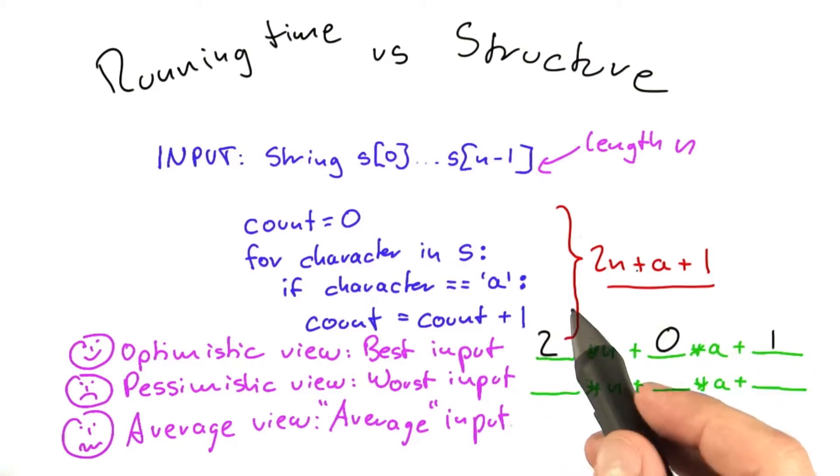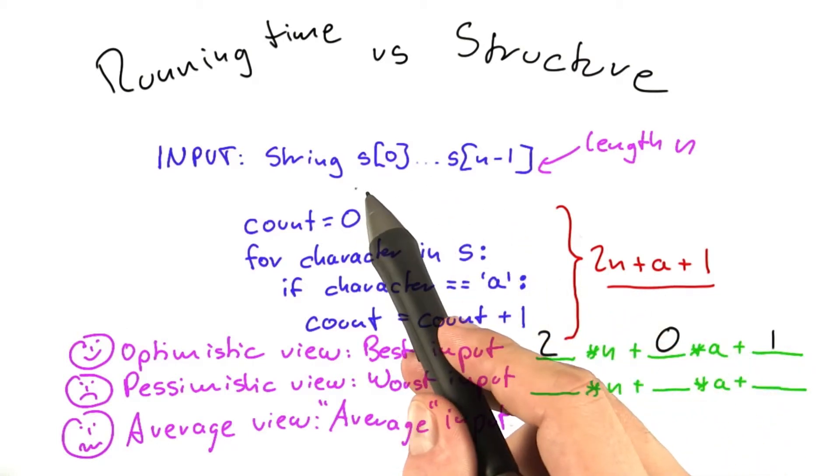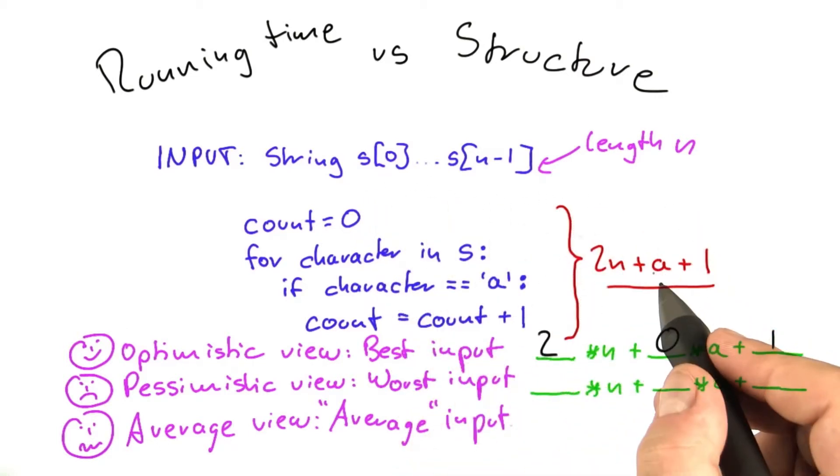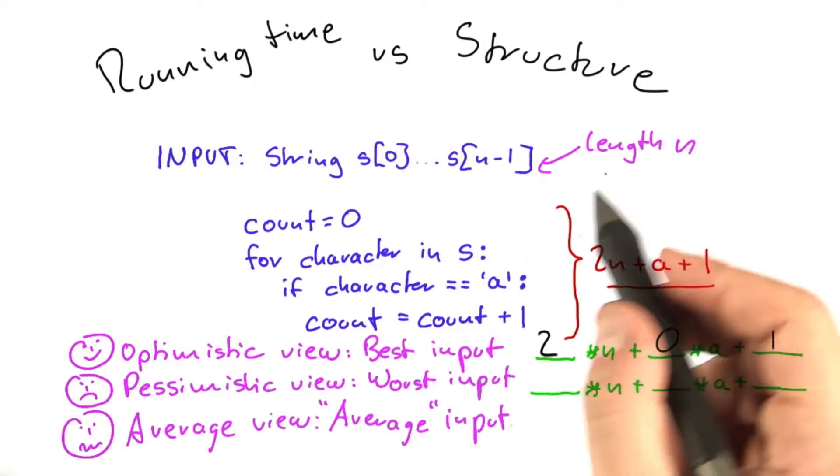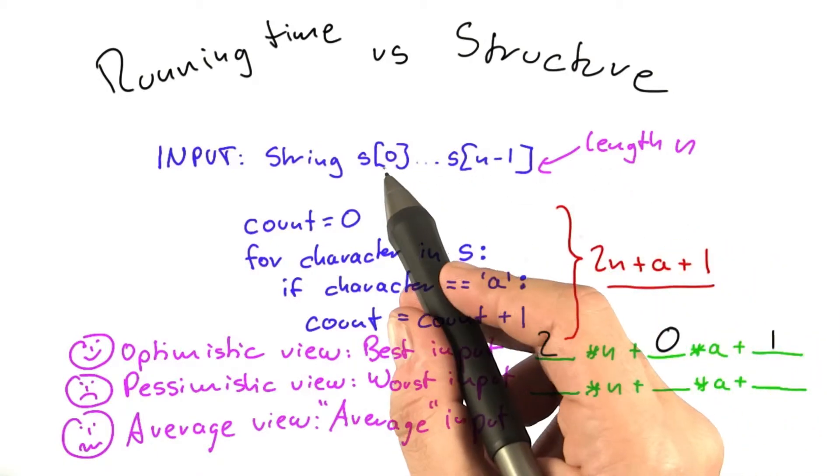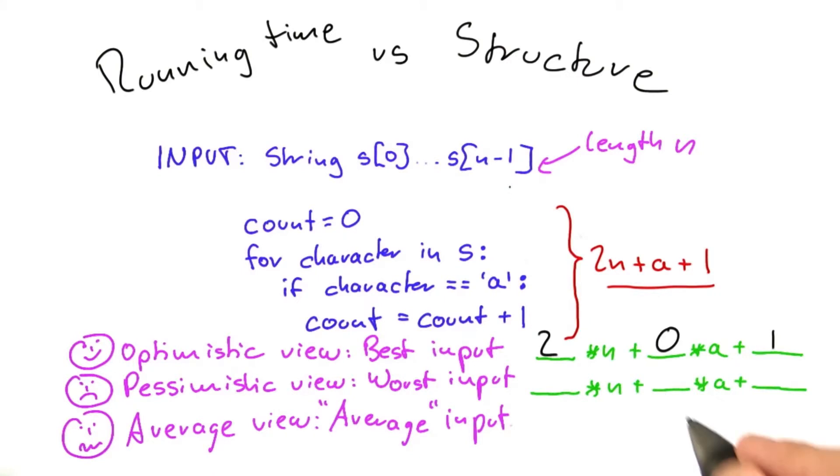Now, in the worst case, the string will just consist of a's, and this will set a equal to n because each of the letters in the string will be a. And so if a equals n, then the overall running time is 3 times n plus 0 times a plus 1.